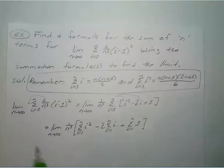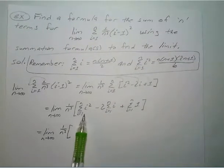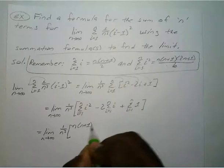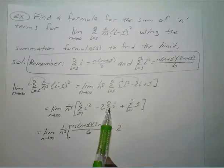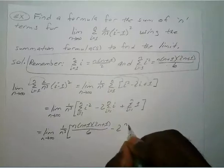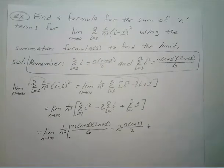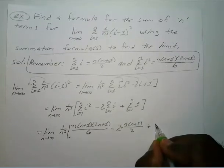Now we substitute the summation formulas. The sum of i squared becomes n times n plus 1 times 2n plus 1 over 6. Minus 2 times the sum of i, which is n times n plus 1 over 2. Plus the sum of the constant 1 from 1 to n, which is just 1 times n.